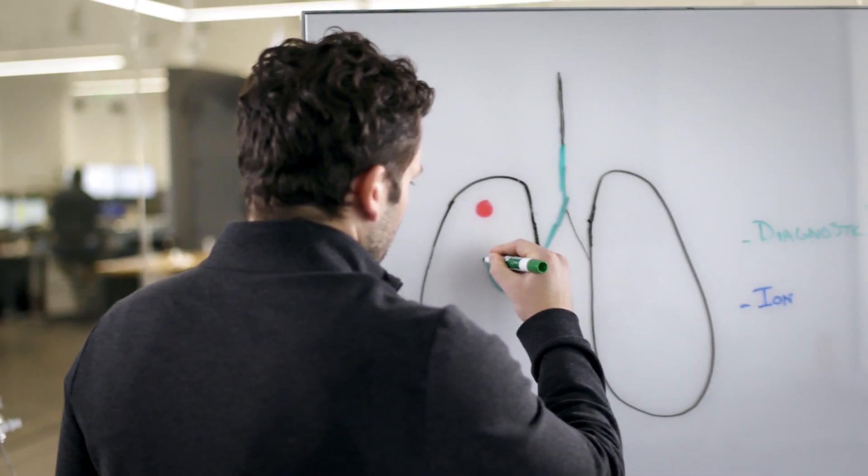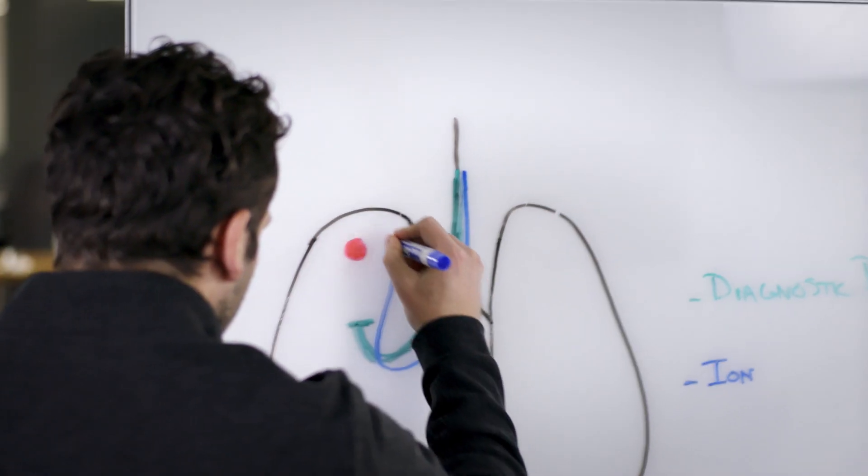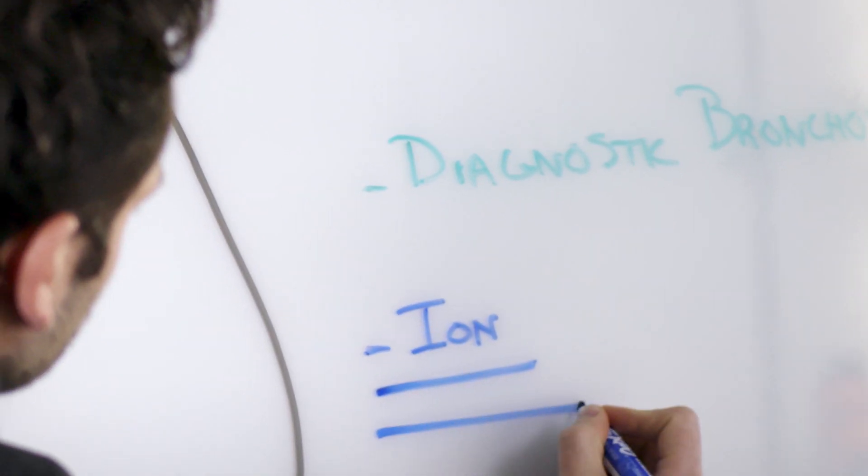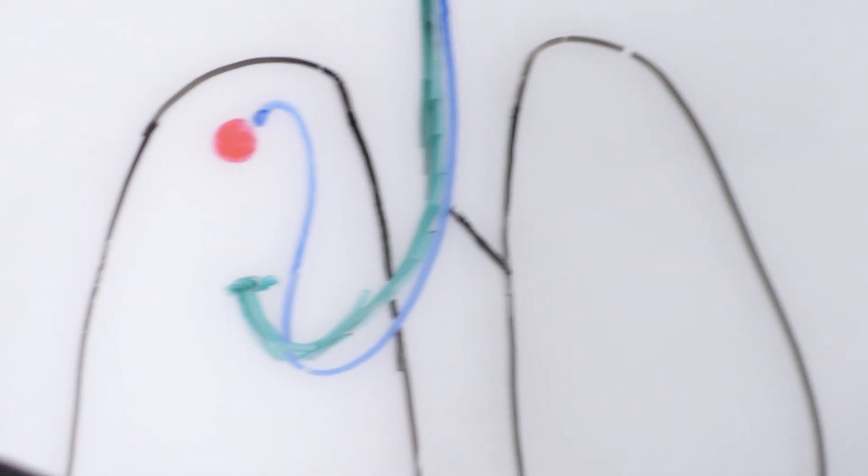If we were to integrate the camera at all times within the catheter, then the outer diameter would have to be increased. Visualization might not provide any additional benefits if the catheter potentially doesn't reach the target location.